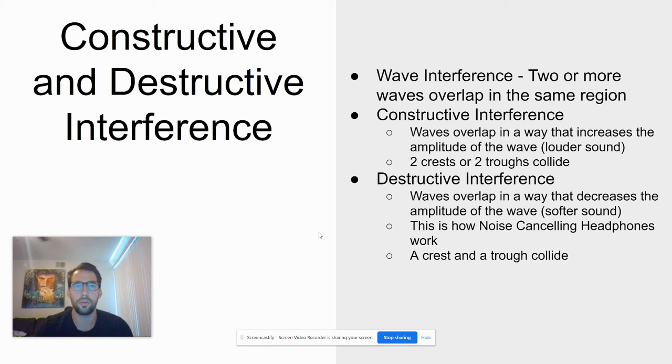Constructive and destructive interference happens when two or more waves overlap and collide with each other. Constructive interference is when two waves overlap and the crests line up or the troughs line up. With destructive interference, it's when two waves come together and a crest and a trough line up. When they collide, they're going to cancel each other out.